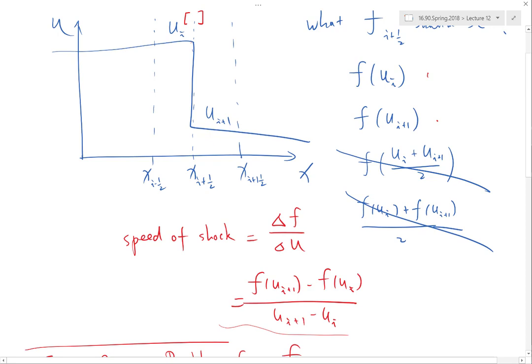In order to develop a second order accurate scheme, you have to use what's called a flux limiter. Basically, that's a detection mechanism of: is there a shockwave or not?